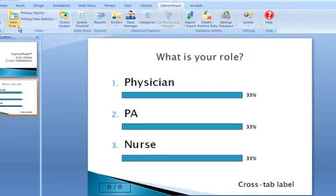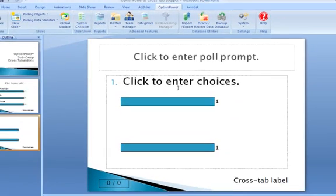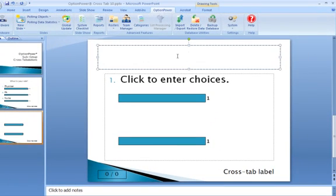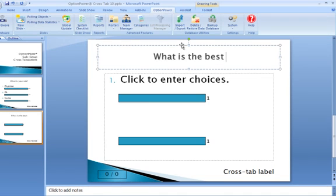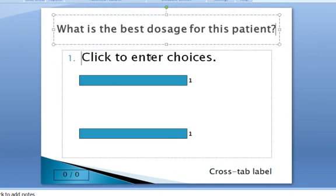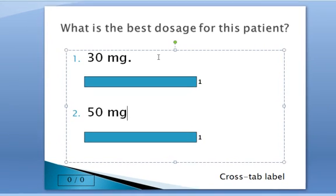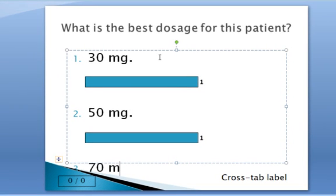Now I'll save my slide. We'll go out and create one more slide. In this case, let's assume that during our presentation we're doing a case study, and we can ask: what is the best dosage for this patient? Let's assume we've presented some information about a particular patient. We'll give the group three choices: 30 milligrams, 50 milligrams, and 70 milligrams.